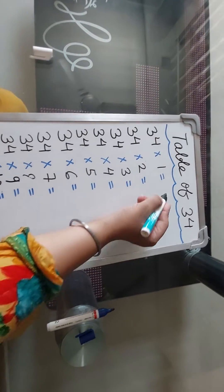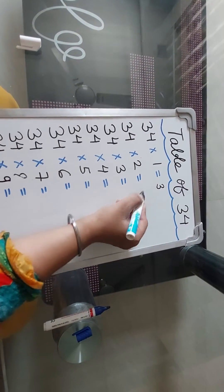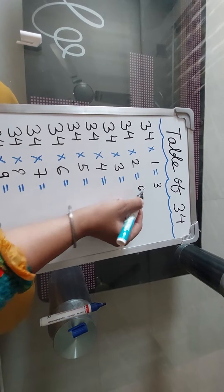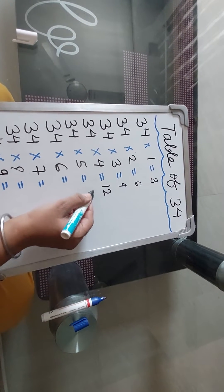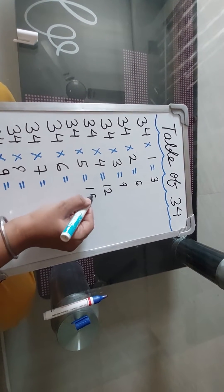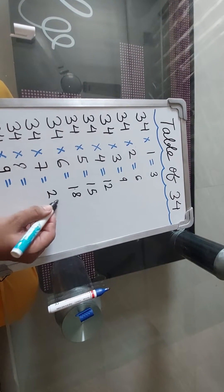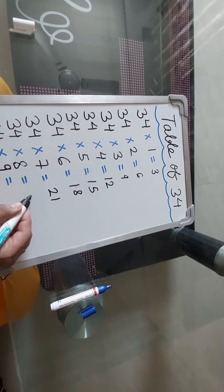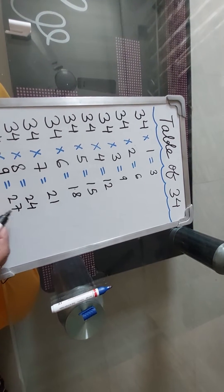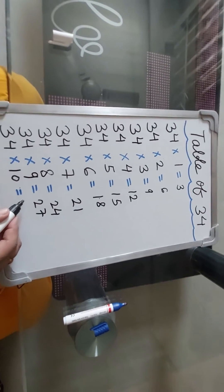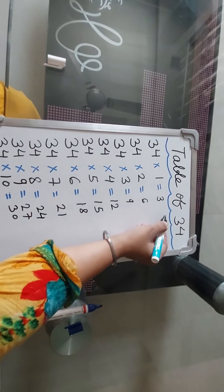Table of 3. 3 ones are 3, 3 twos are 6, 3 threes are 9, 3 fours are 12, 3 fives are 15, 3 sixes are 18, 3 sevens are 21, 3 eights are 24, 3 nines are 27, and 3 tens are 30. Then you can write the table of 4.